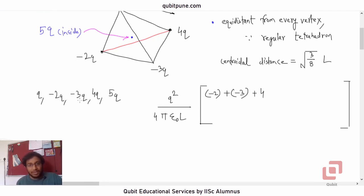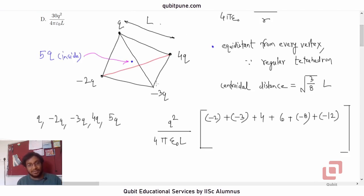Now, let us go to negative 2Q. Negative 2Q needs to be paired with not Q because that has already been considered. So, negative 2Q into negative 3Q, that will be 6. Then negative 2Q into 4Q, so that will be negative 8. Now, this is upon L because all the charges which are at the vertices, they are at a distance L from each other, which is equal to the length of the side of the tetrahedron because the tetrahedron is regular.